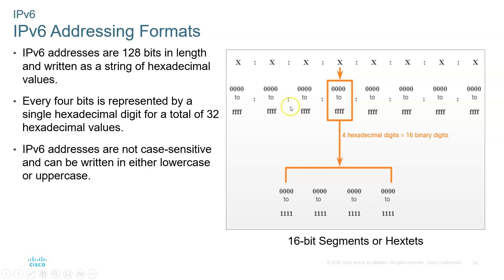The IPv6 address is made up of 8 hex groups. Each group is made up of 16 bits, so you have 8 groups — 8 times 16 is 128. They are separated by a colon, not by dots.